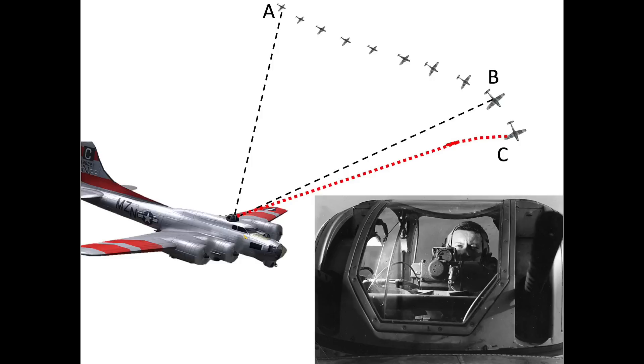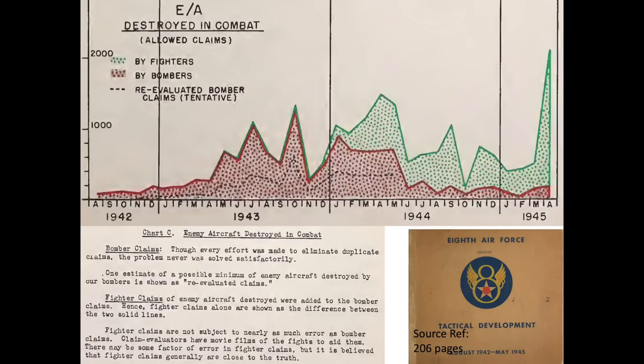Post-war records review have shown that bomber gunner claims on some missions were around 10 times the actual number destroyed. Bomber command realized that bomber gunners were over-claiming the number of kills. This 1945 206-page 8th Army Air Force tactical development document discusses the overclaiming of kills by bomber gunners. The report indicates that elimination of duplicate bomber gunner claims was never solved satisfactorily. However, bomber command did reevaluate bomber gunner claims attempting to establish more realistic values. The report goes on to say that fighter claims were deemed more accurate due to fighter camera footage available for review.